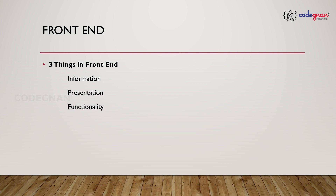In frontend we have three things: information, presentation, and functionality. Information means there is some content — some type of data you are going to have. Presentation is the way you display that content. Presentation plays a crucial role because it defines how your content is shown to the user.